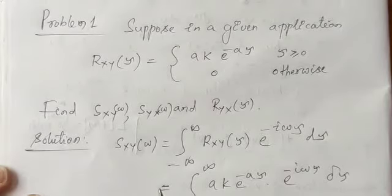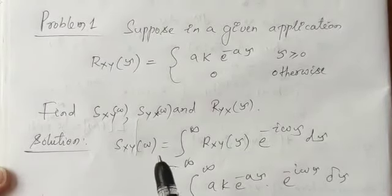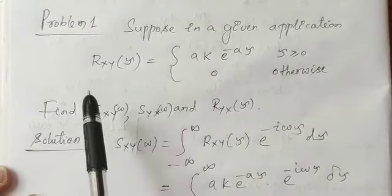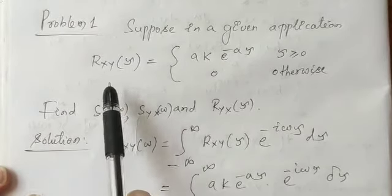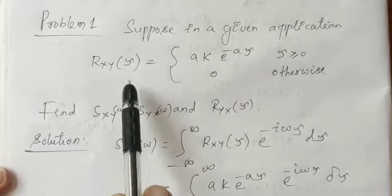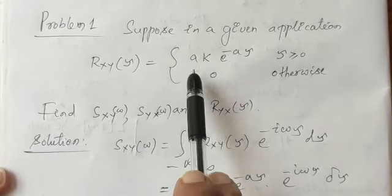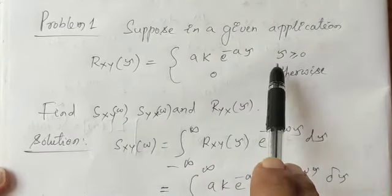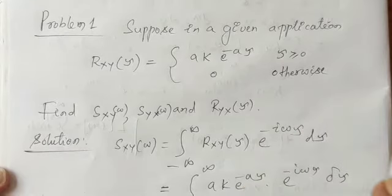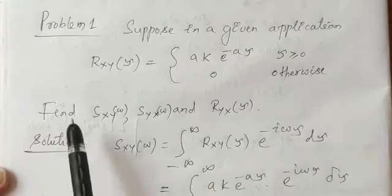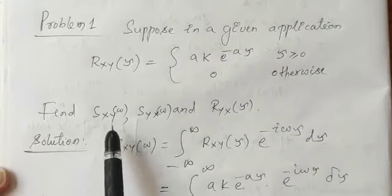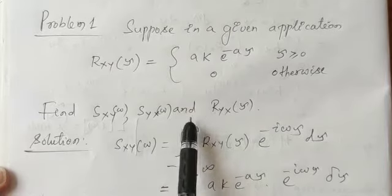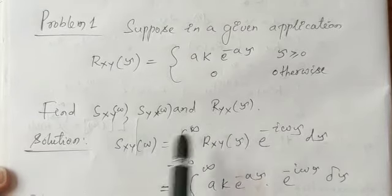Now we will take up the problems. Suppose in a given application the cross correlation is defined as Rxy(tau) = A·k · e^(minus A·tau) whenever tau ≥ 0, and 0 otherwise. Find Sxy of omega, Syx of omega, and Ryx of tau.